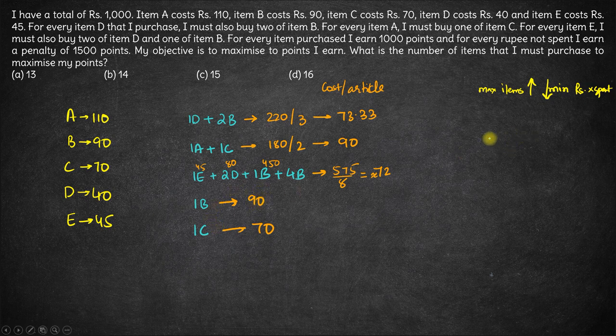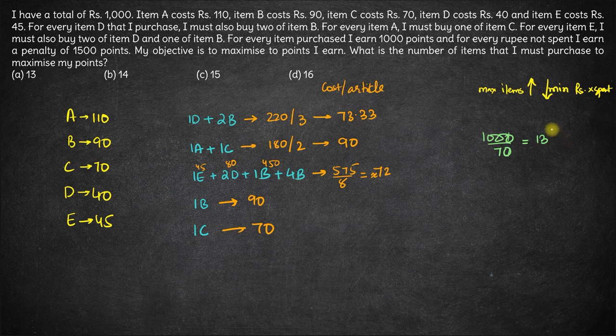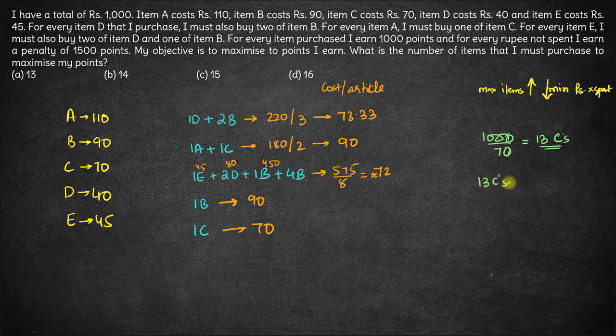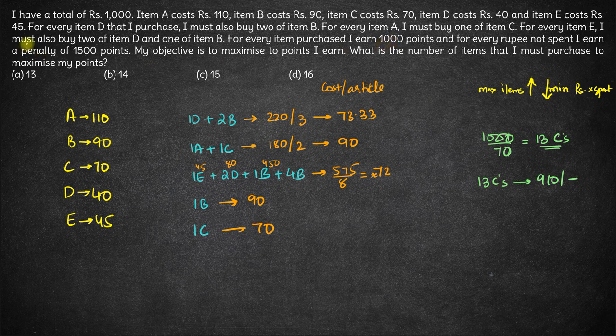So I will try to buy maximum number of items which are C. So 1000 divided by 70 is approximately 13. You cannot buy point articles, so you'll buy 13 Cs. The cost of 13 Cs will be 13 into 7 which is 910 rupees. So I still have 90 rupees. If I don't spend that 90 rupees I will earn a penalty of 1500 per rupee. So I cannot do that.